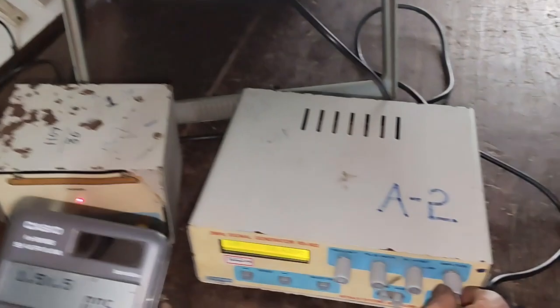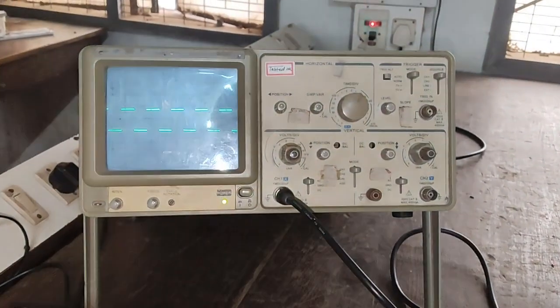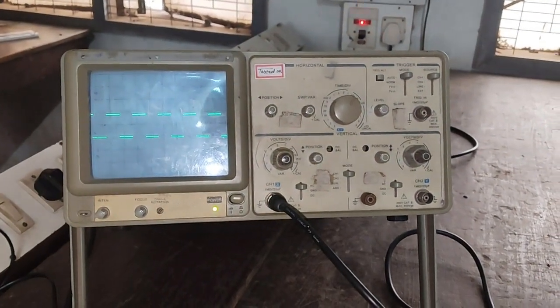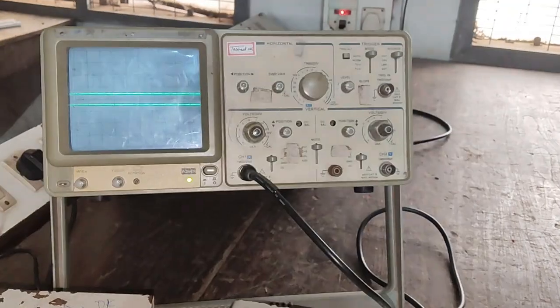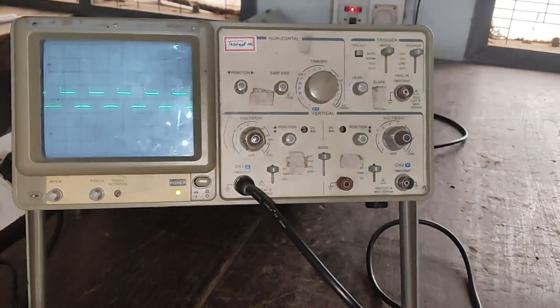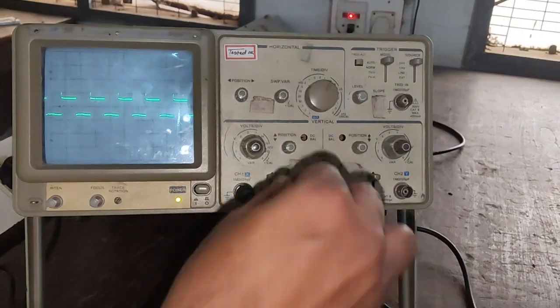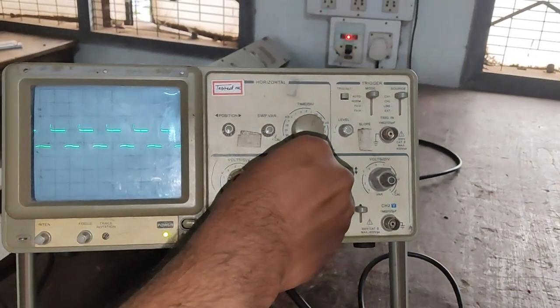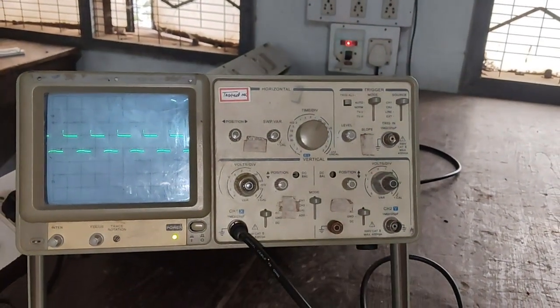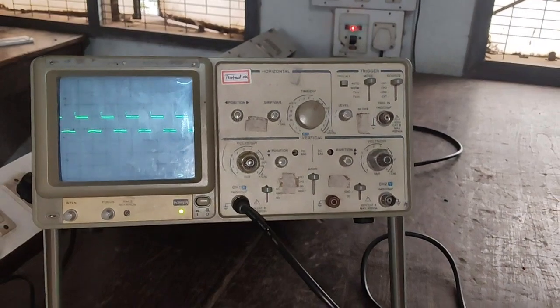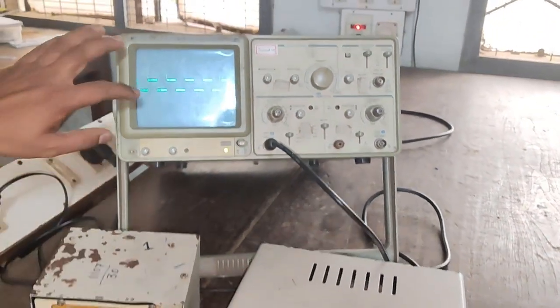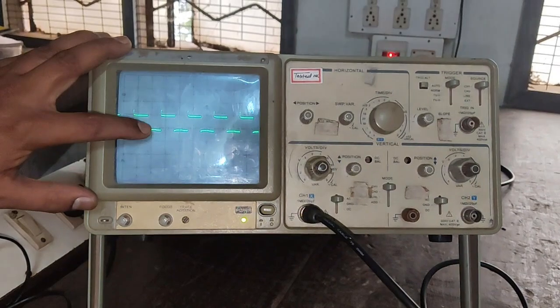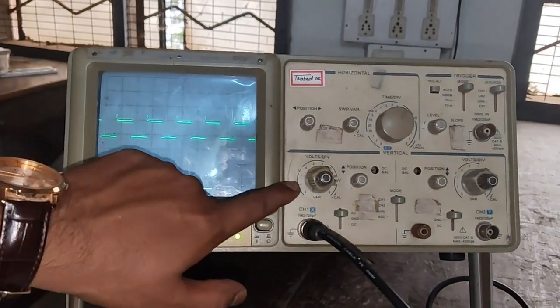Let's make it 1 volt here. With the help of function generator I will make it 1 volt. Keep this to 1 volt. Now the input is 1 volt. Here we can see that this is 1 division into 1 volt.